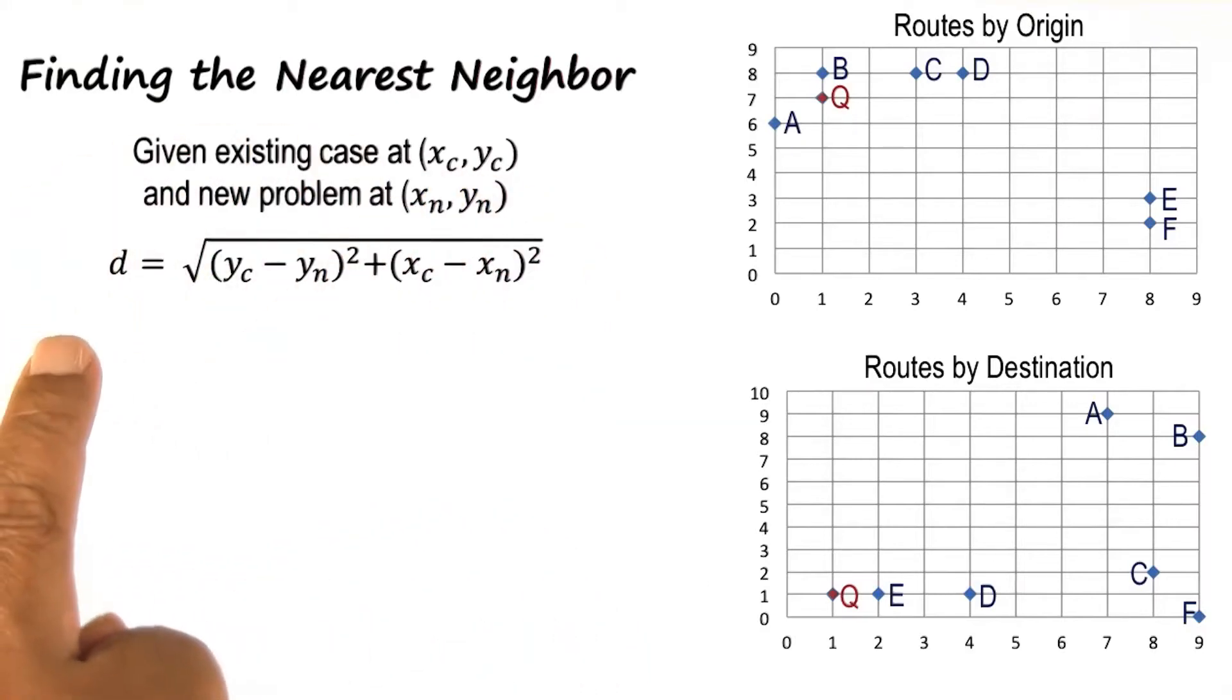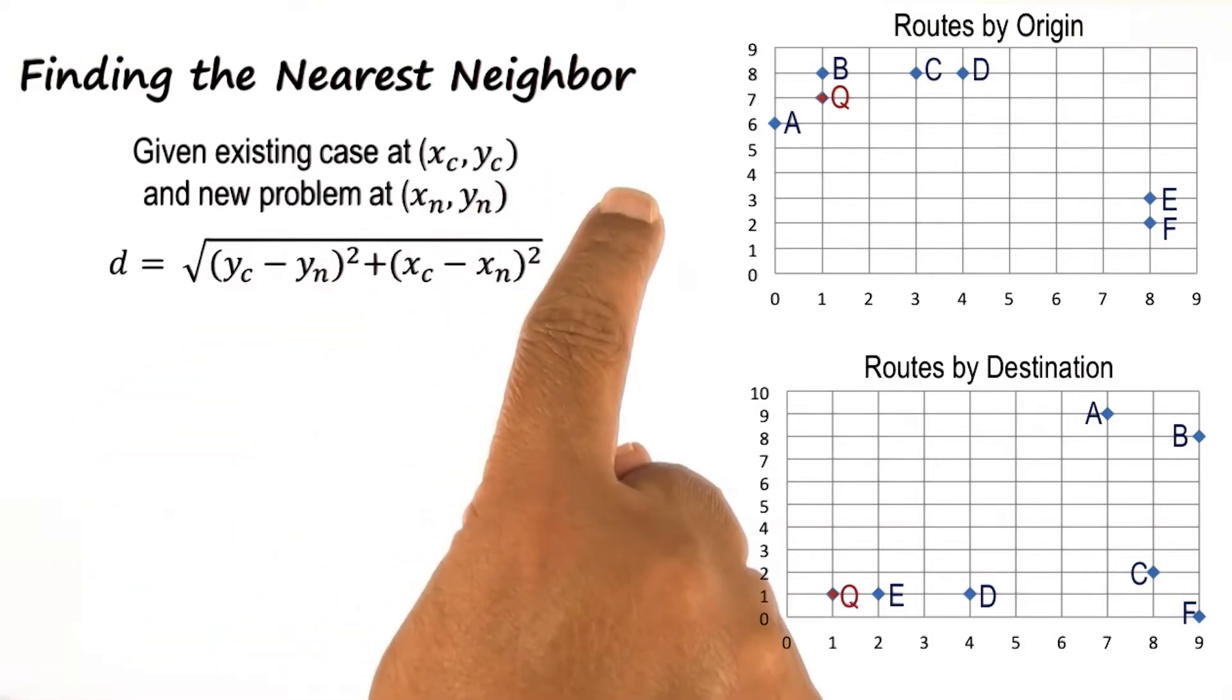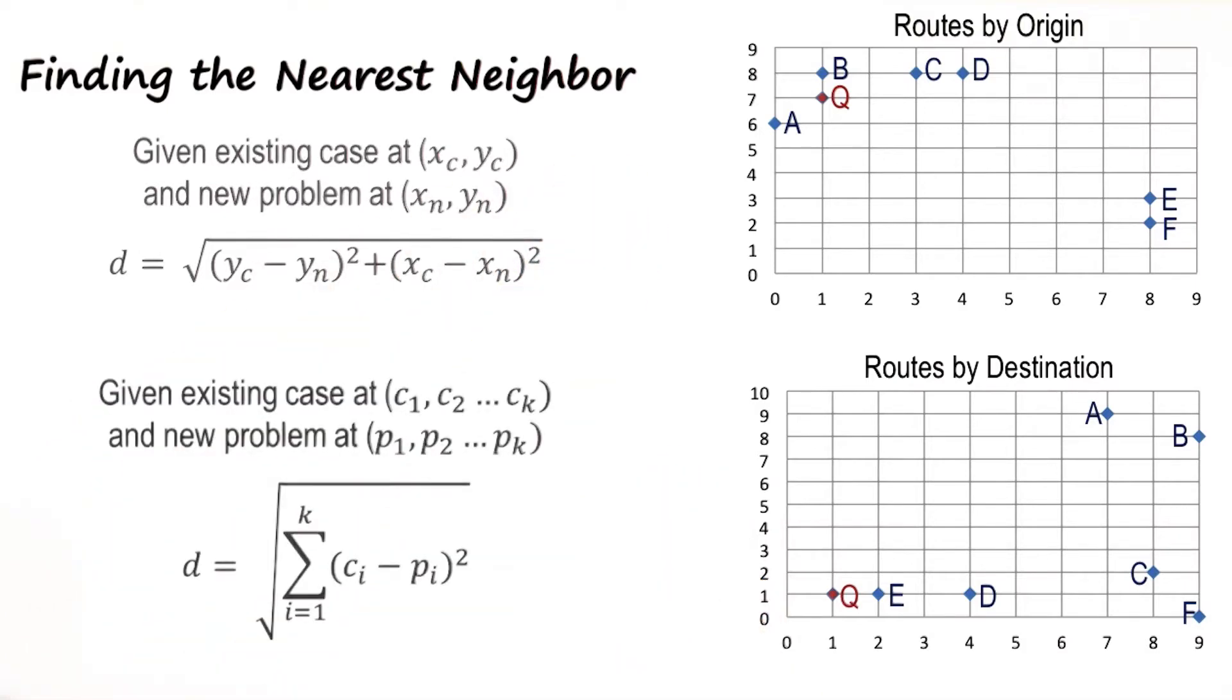Earlier we had this formula for calculating Euclidean distance in two dimensions. Now we can generalize it to many dimensions. So here is a generalization of the previous formula for computing nearest neighbor.